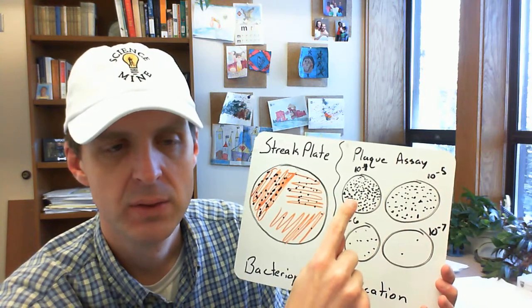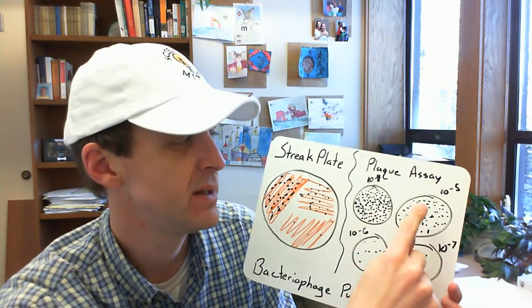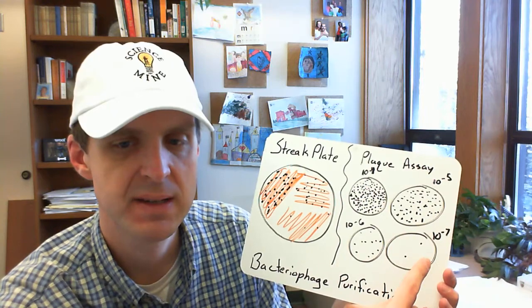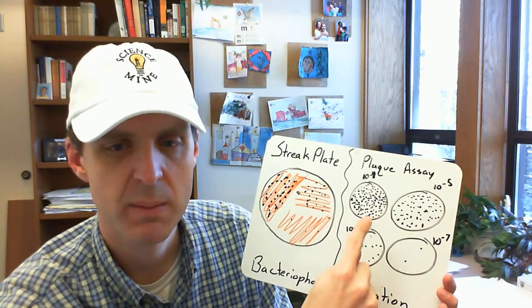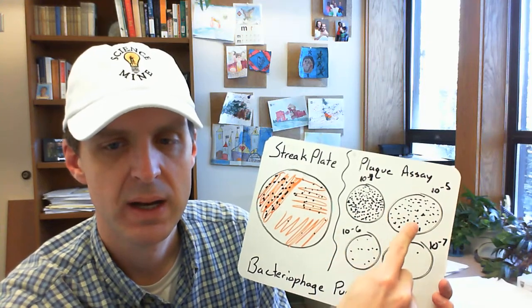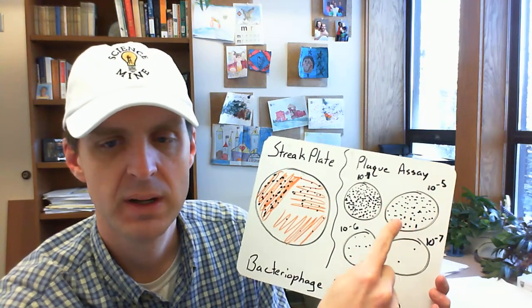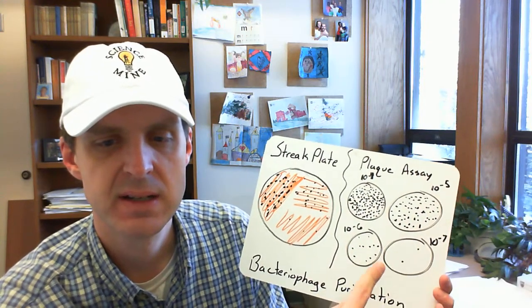So you take your original sample that we saved, dilute it out to ten to the minus four and then continue doing tenfold dilutions all the way to ten to the minus seven. And in this case you get plenty of plaques on your ten to the minus four plate, a few fewer on your ten of the fifth, ten to the sixth, ten to the seventh.